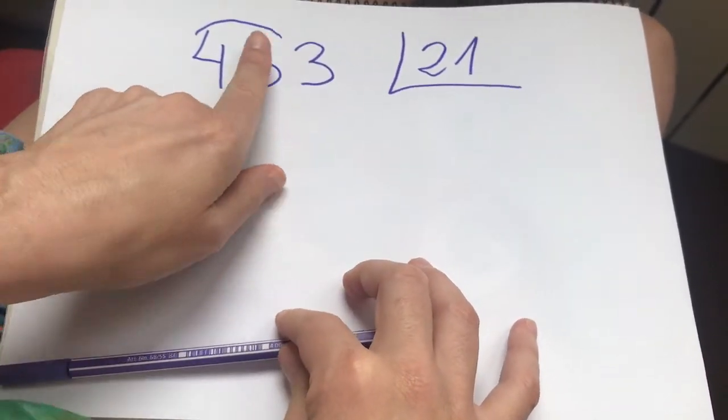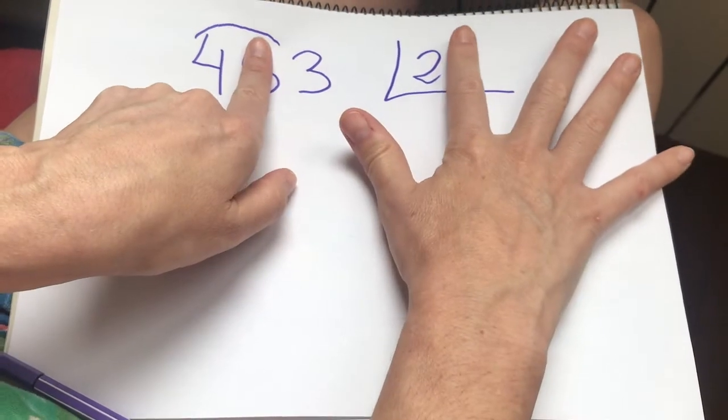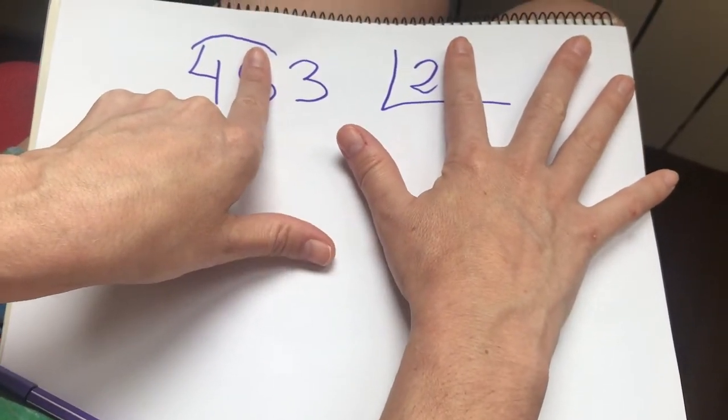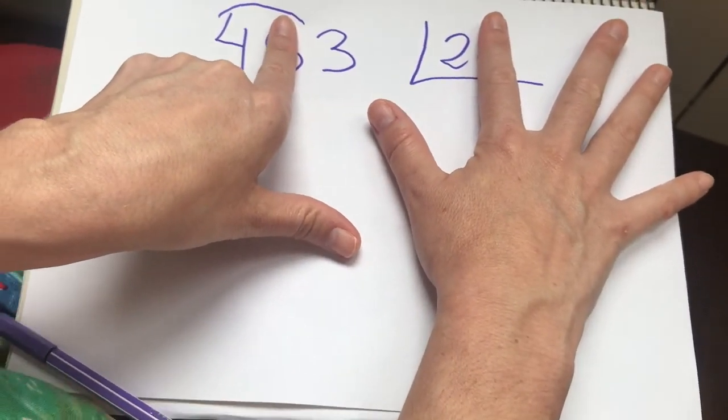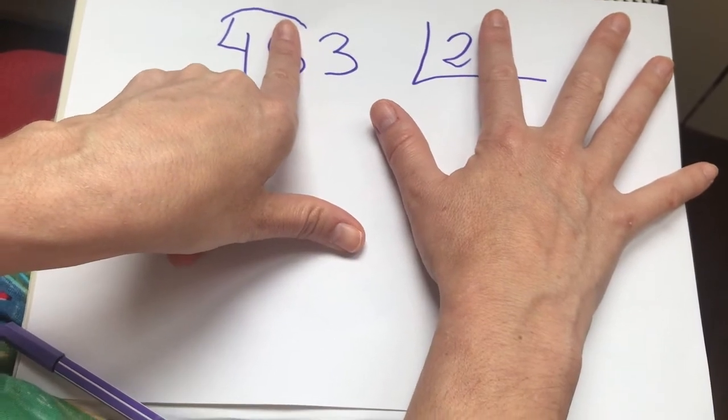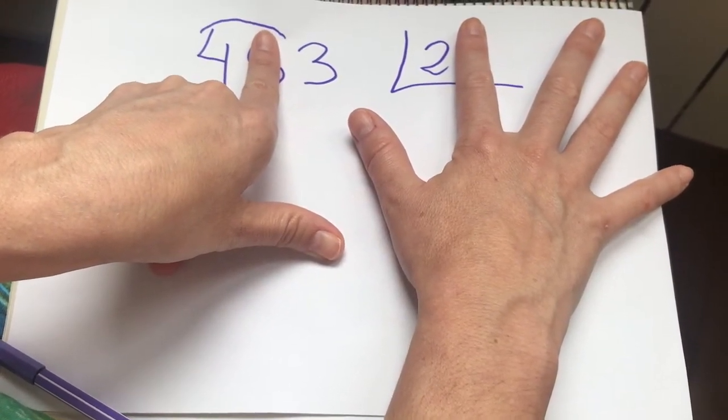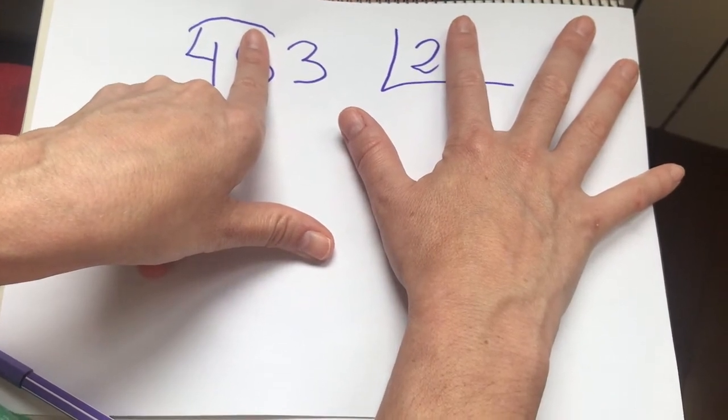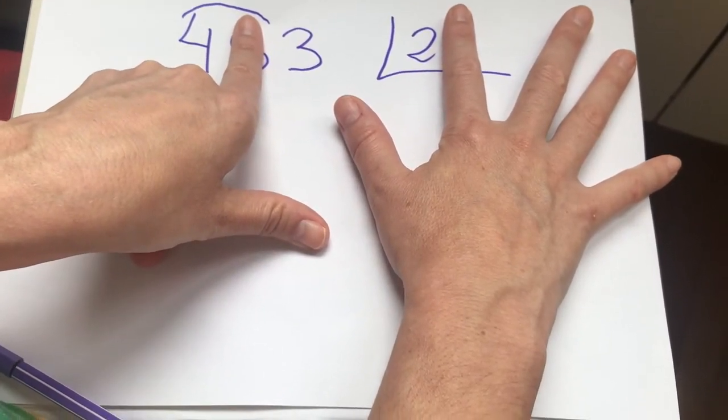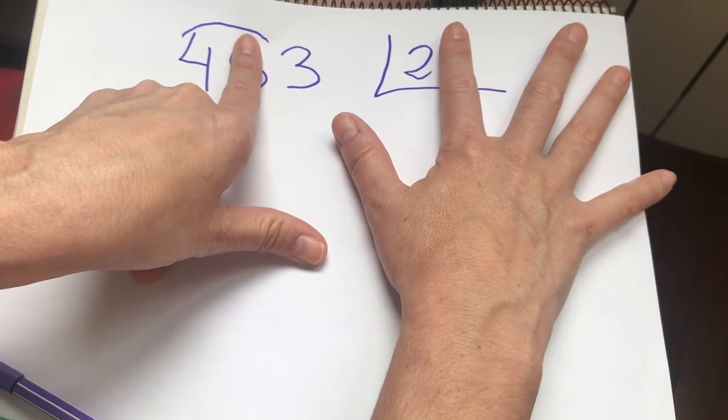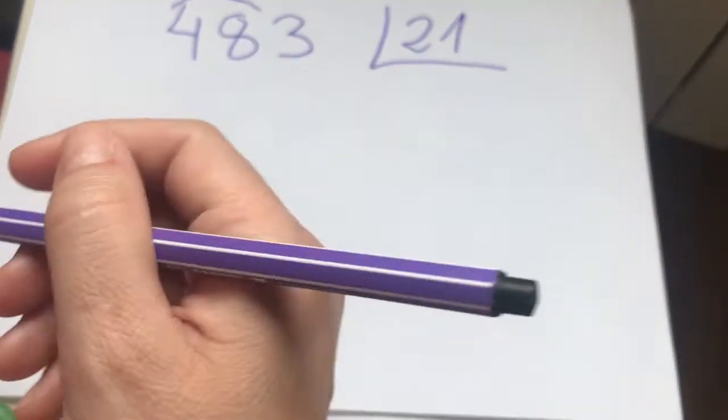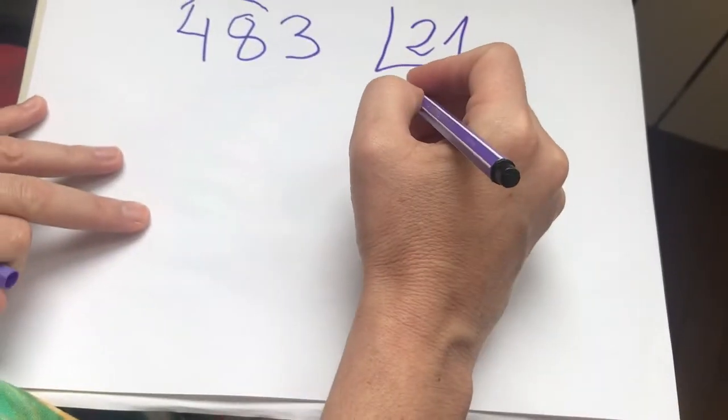lo que hacíamos era tapar la cifra de la derecha. ¿Para qué? Pues para mirar más o menos a qué voy a probar para poder dividir. Entonces veo el 4 y el 2. Entonces digo 4 dividido entre 2. ¿Qué número multiplico por 2 está más cerca del 4? 2 por 1, 2. 2 por 2, 4. Vale, pues voy a probar a 2.